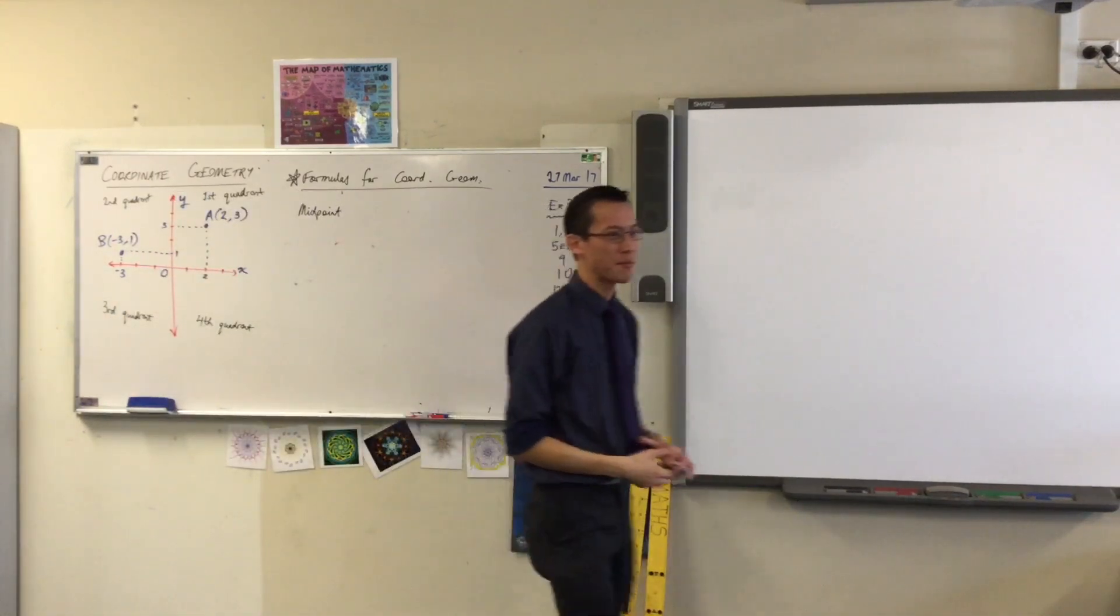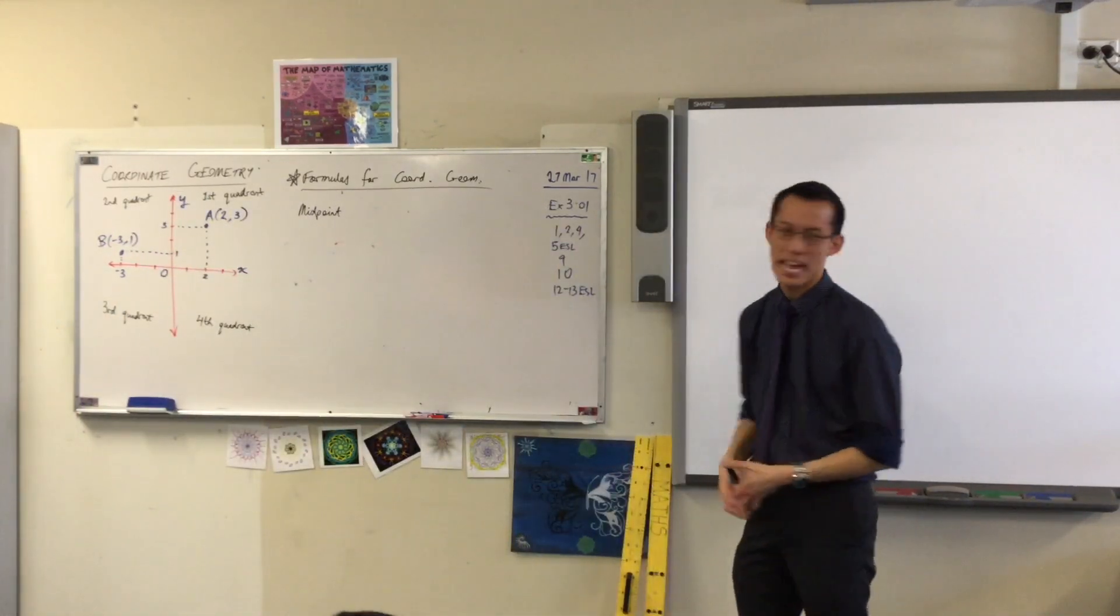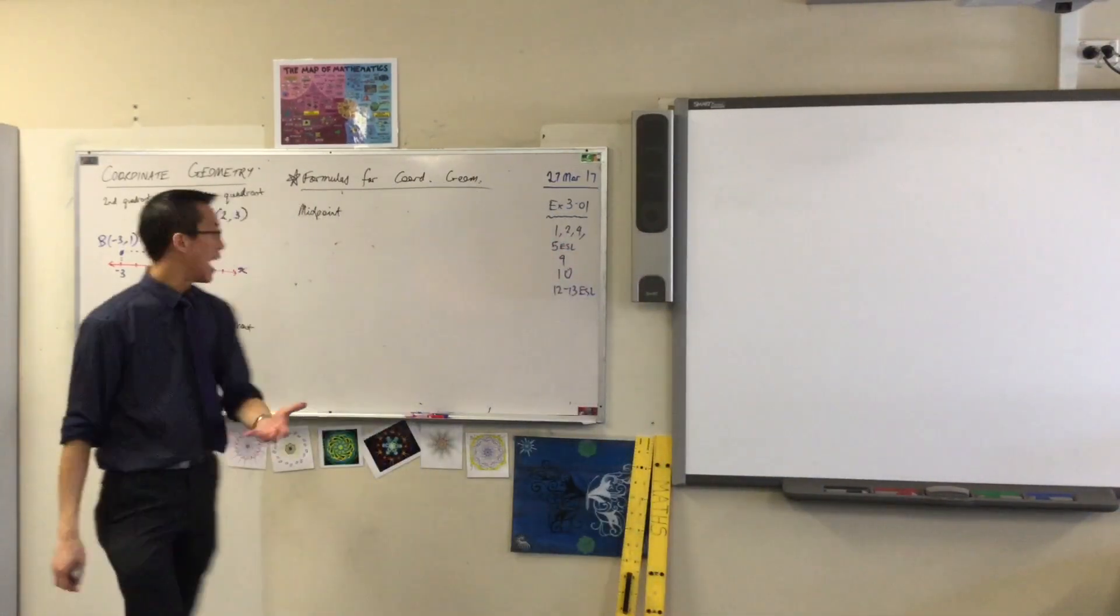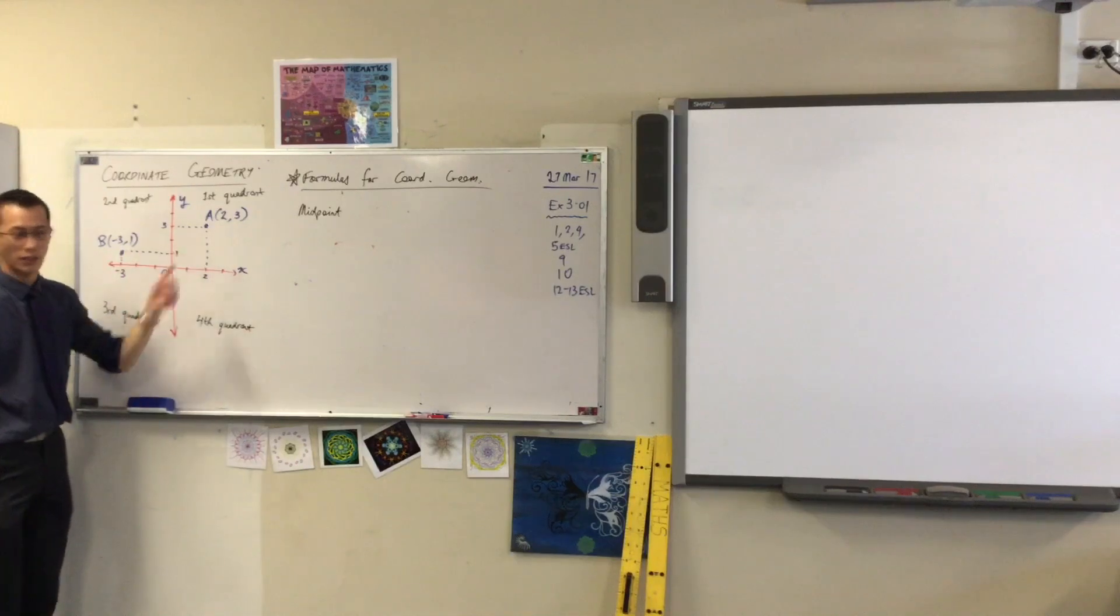So this is like, you've got two points, right? What's the one point that is exactly halfway between yours? So I'm going to give you the formula and then we're going to have a go and see how it works over here.